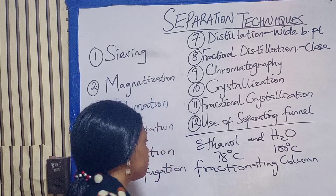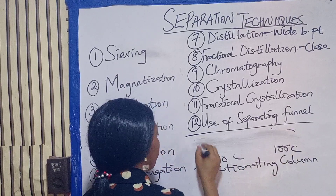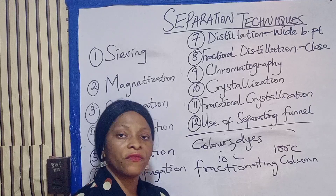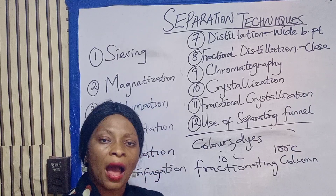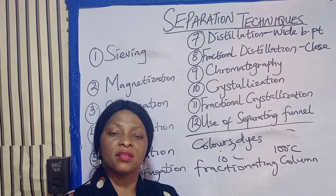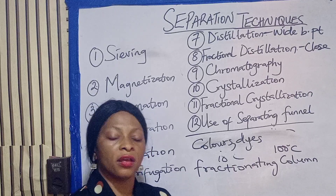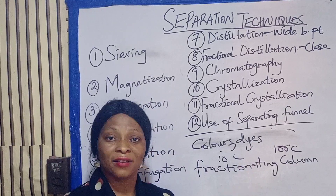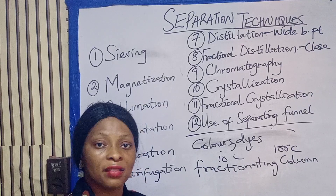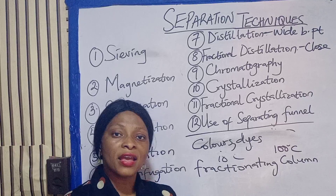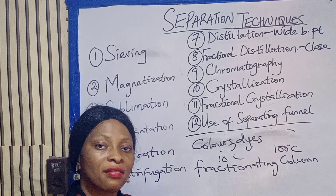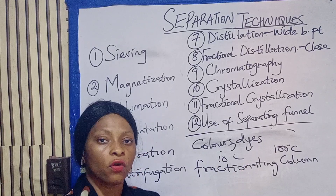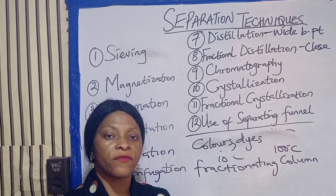The next one is chromatography. Chromatography is used to separate substances that are needed in small quantities. It is used in the separation of colors, dyes, and anything involving pigments. It is used in scientific research to find out the amount of preservatives in a substance — whether they are in excess or to determine the constituents of a mixture. Food scientists and organizations like NAFDAC use chromatography to discover if preservatives are necessary or present in excess amounts.